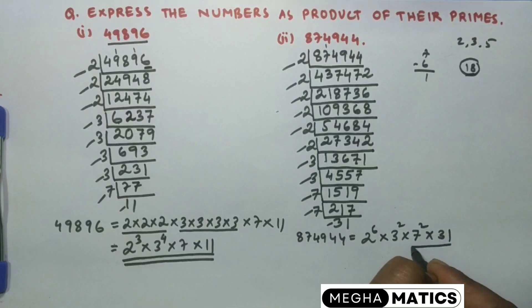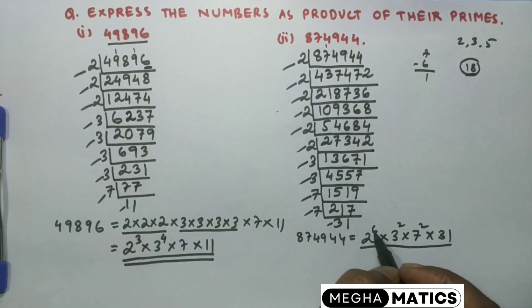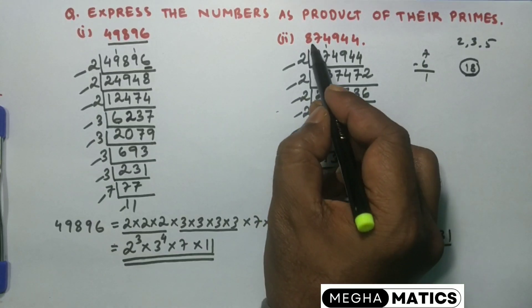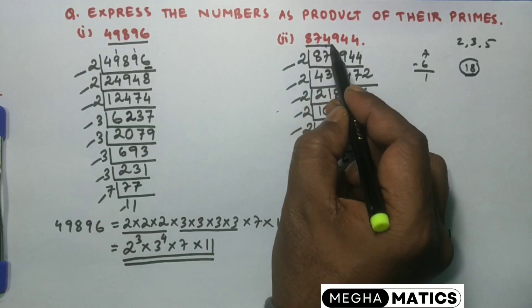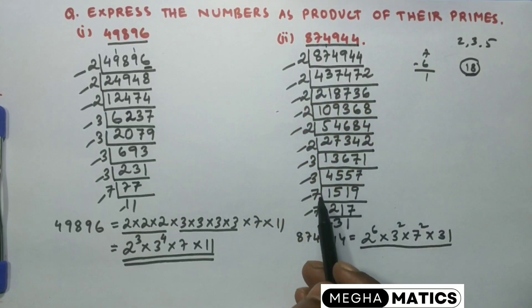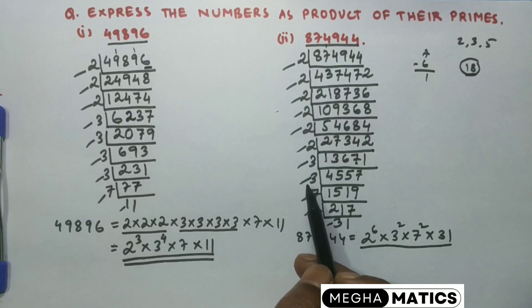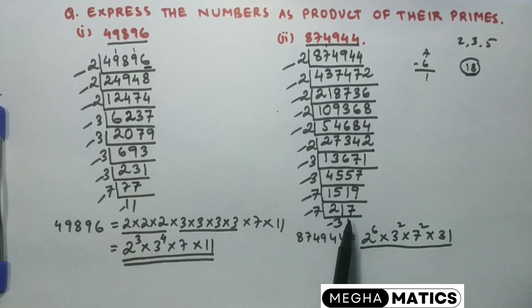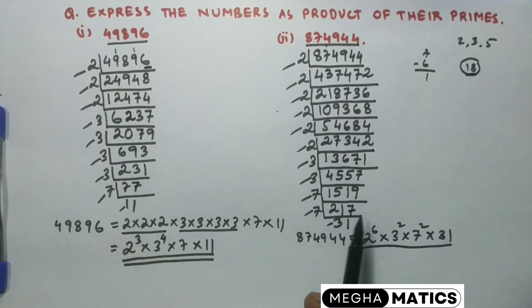So from 874,944, we have found: six 2s — written as 2 to the power 6 — then two 3s — that means 3 squared — then two 7s — and then into 31. So in any equation, if we need to find the product of prime numbers, we can use this method. Thank you for watching.